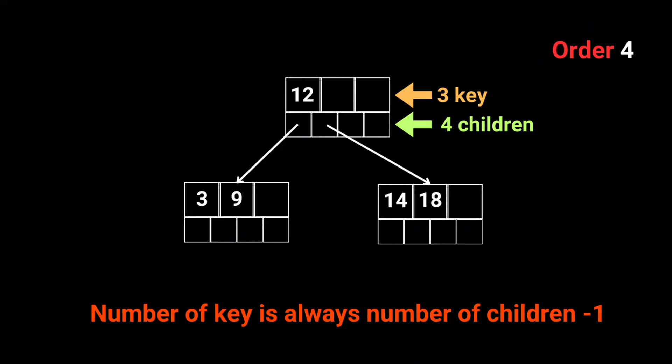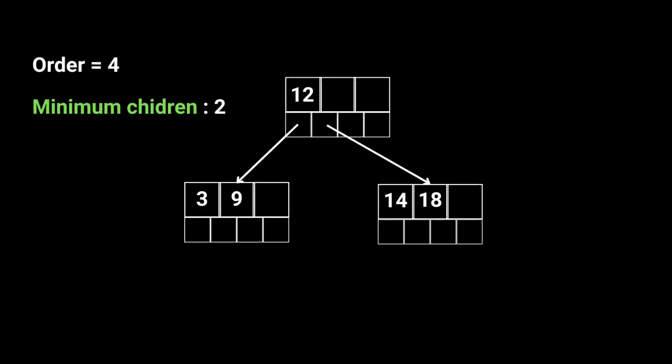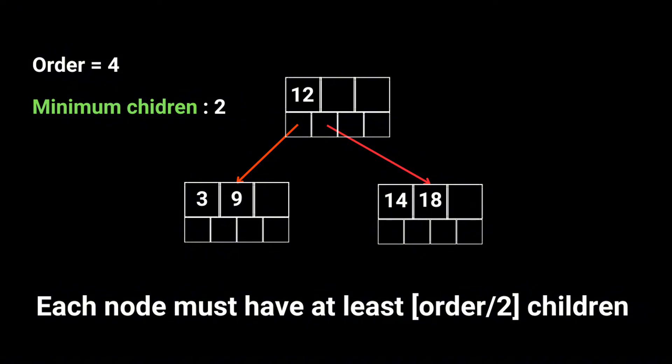Now onto the second crucial point. Each node must have at least a half of the order's number of children. With an order of four, the minimum number of children is two, because four divided by two is two. This tree meets that requirement as you can see here with the first and second child.